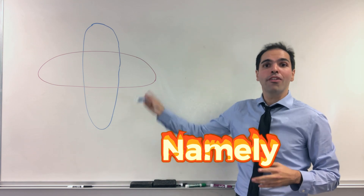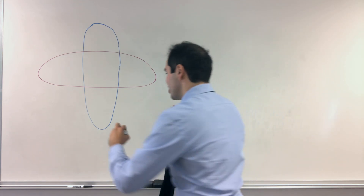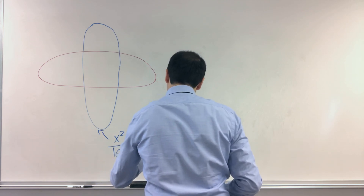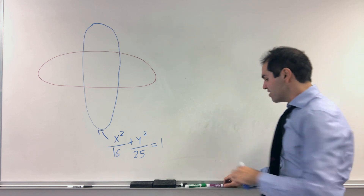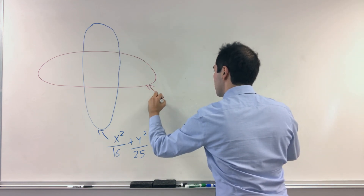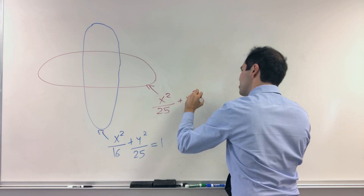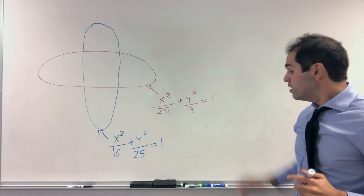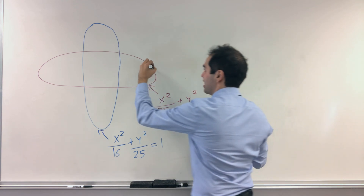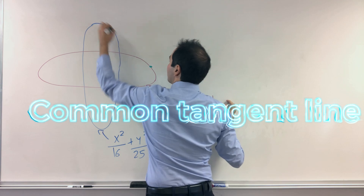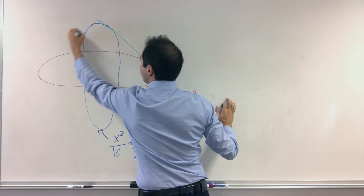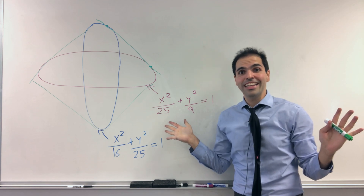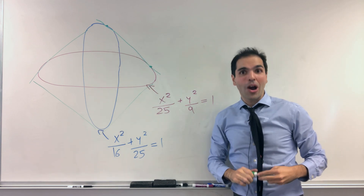Consider the following two ellipses. One which has equation x² / 16 + y² / 25 = 1, and the other one has equation x² / 25 + y² / 9 = 1. Now, notice in this picture, those two ellipses have a common tangent line — in fact, four of them: like this one, and also this one, this one, and this one. And the question is, without using any calculus, find the equations of those common tangent lines.